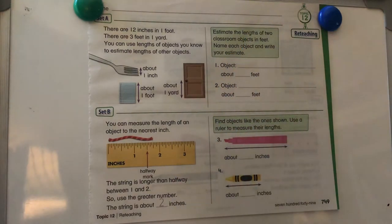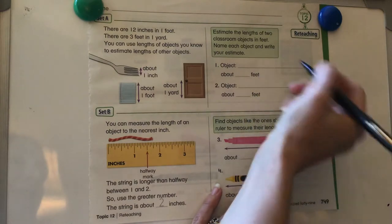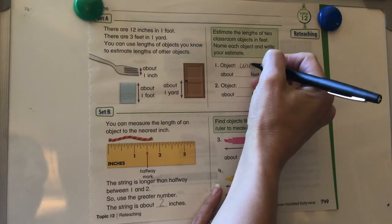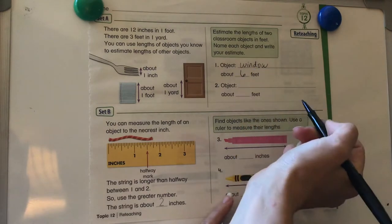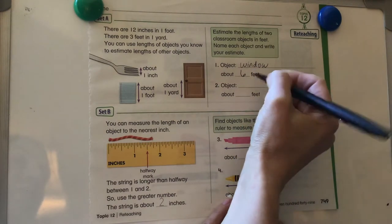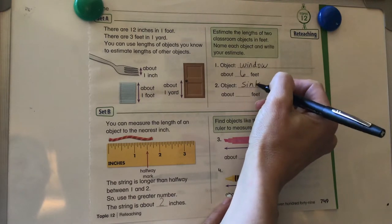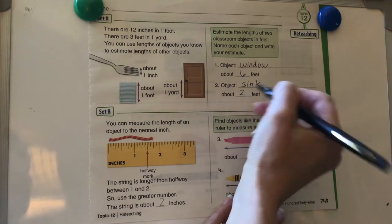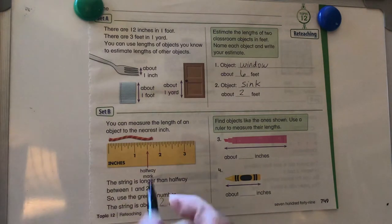It says estimate the lengths of two objects in feet. Name each object and write your estimate. So I'm going to say my object is the window and my estimate is about six feet and then another object will be the sink. I think our sink is about two feet across. So we're just writing objects and we're just estimating different things. You can choose different ones around your house.